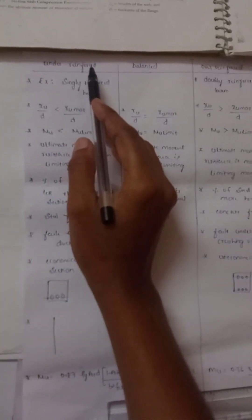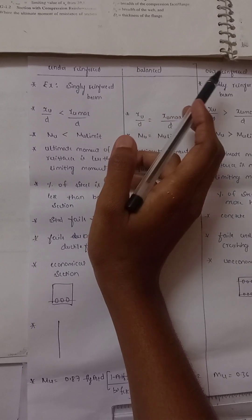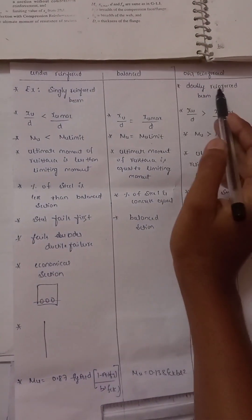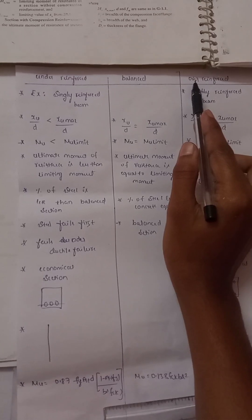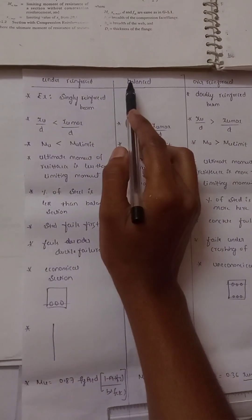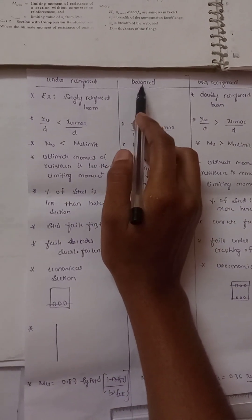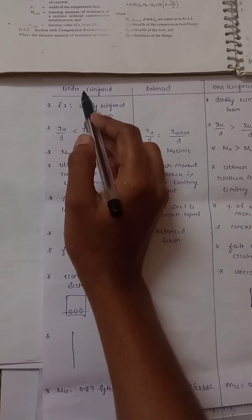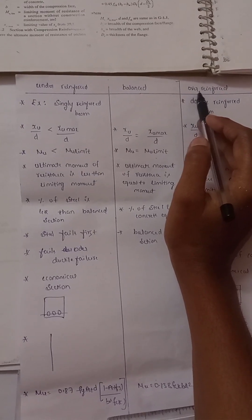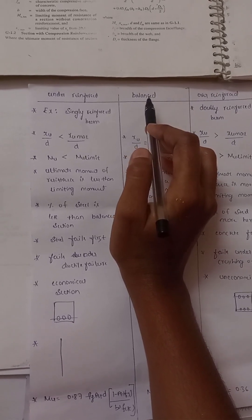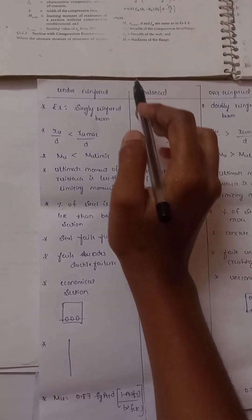The difference between under-reinforced, balanced, and over-reinforced sections: under-reinforced means less steel, over-reinforced means more steel compared to balanced. In an under-reinforced section we use less steel; in an over-reinforced section we use more steel; in a balanced section, the percentage of steel and concrete are in the same proportion.